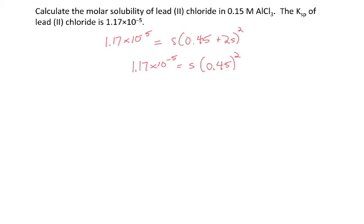When I square that and divide both sides by 0.203, S comes out to be 5.78 × 10⁻⁵ moles per liter.